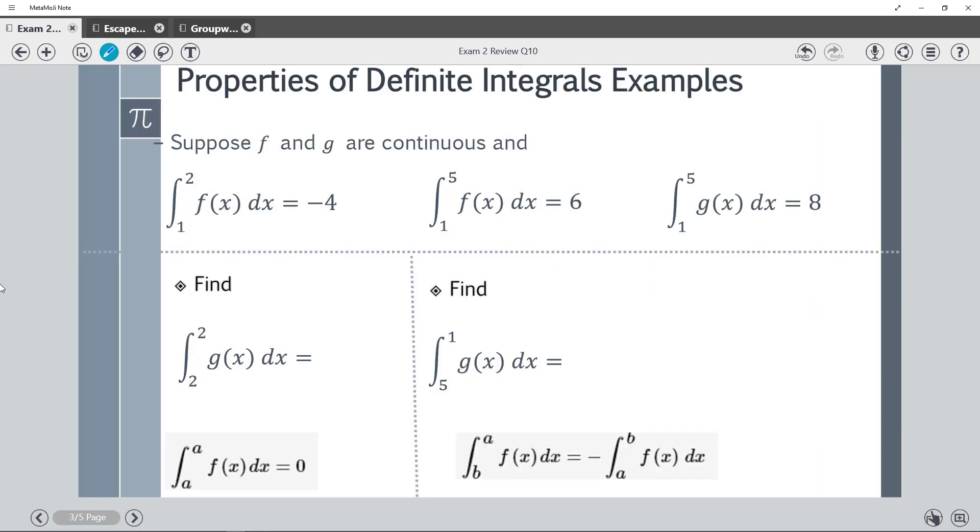So you're given two functions, f and g are continuous, and we're given these integrals. So f(x)dx from 1 to 2 is negative 4, from 1 to 5. So keep an eye on the a and b intervals. Remember, this is b, this is a. And notice this is a different function.